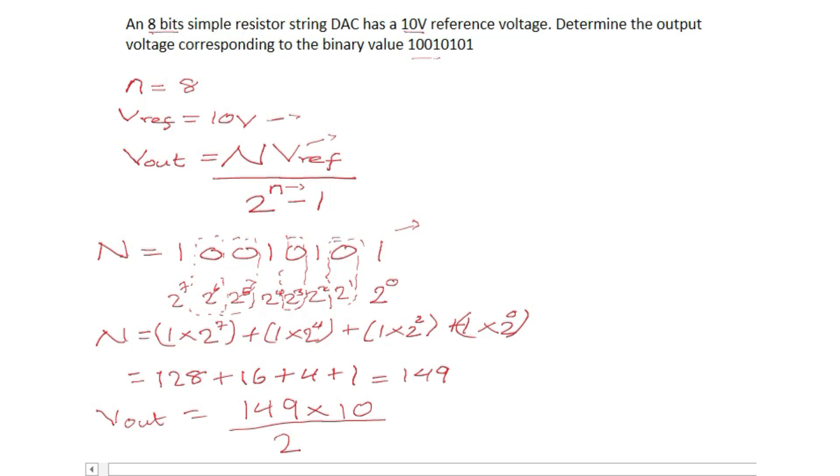Multiplied by our Vref from the question, Vref is given as 10 volts, so times 10, over 2 raised to power small n where small n is the number of bits, which is given as 8, minus 1. So grab your calculators and compute this and get your answers.